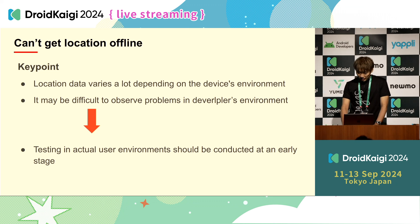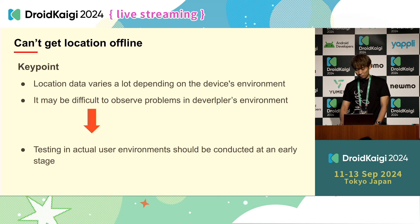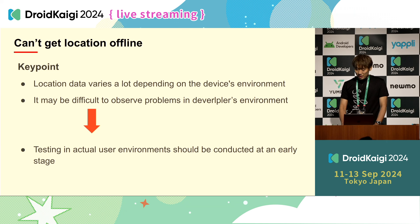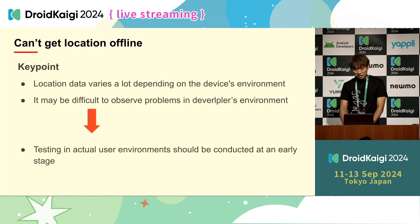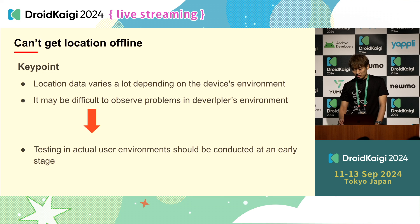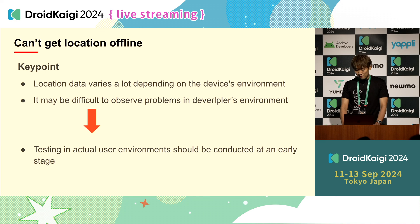As this is an optimization for the limited distribution of offline farmland use, it may not be helpful in many cases. However, it was presented as an example of a case where there are more effective methods than using Fused Location Provider, since location is highly dependent on the user environment.